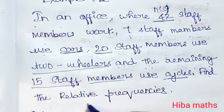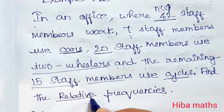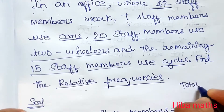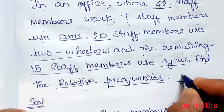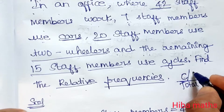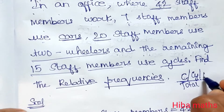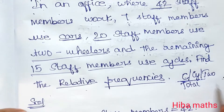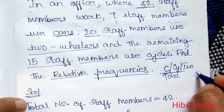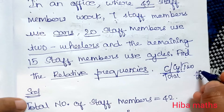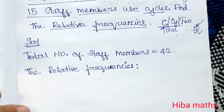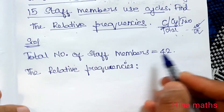So, find the relative frequencies. You have the total number of staff members. Now we refer to the problem — the number of staff members is 42.